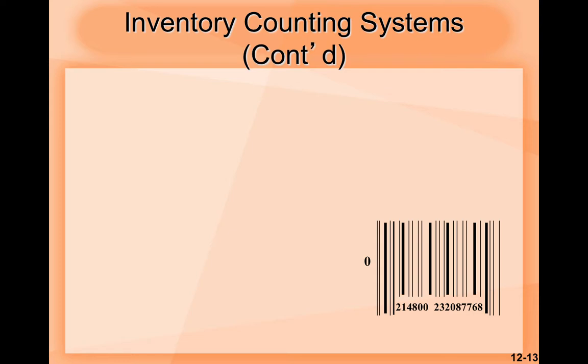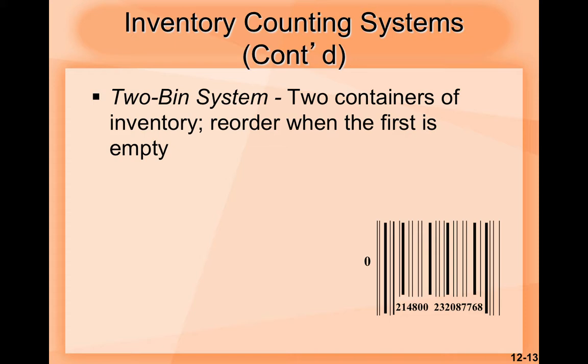Continuing with inventory counting systems, we have the two-bin system — two containers of inventory, with reorder triggered when the first is empty. This is also an old-fashioned but effective mechanical approach. You have two containers, and when one of them is empty, you reorder using the second one — that is the reason for keeping two containers.